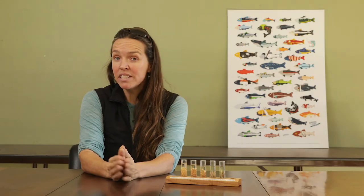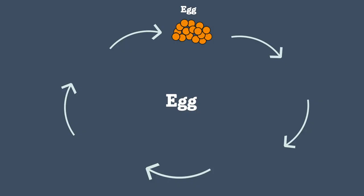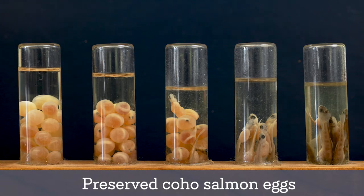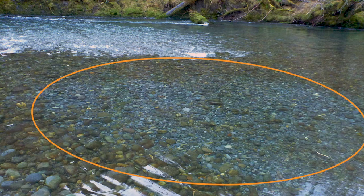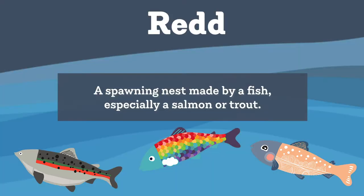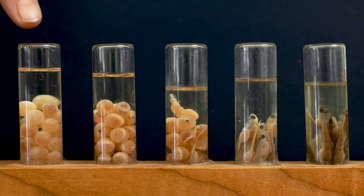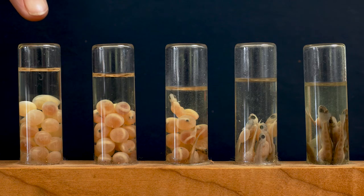We're going to go into detail on all of these. First, let's look at the development from egg to fry. Here is a very nice visual diorama of coho salmon eggs that have been preserved. When adult salmon come back to spawn, they lay their eggs in a nest which we call a redd. Here you can see freshly laid eggs.